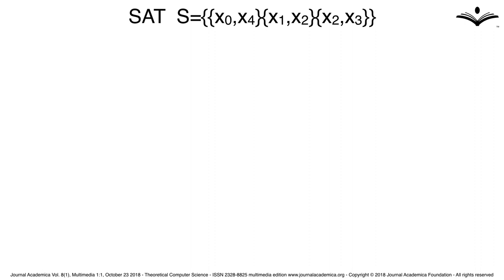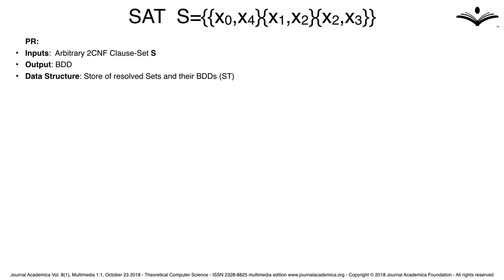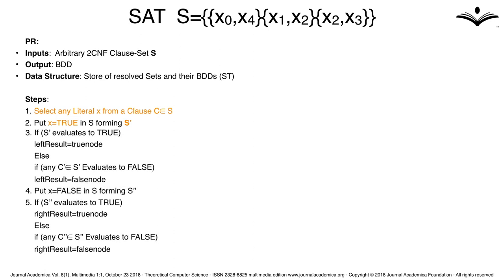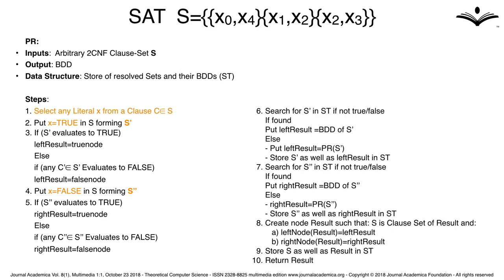If we look at the procedure generating the BDD — let's call it PR — there is a very simple way of doing this. First, you select any literal in the formula S. Then you substitute true for this literal and form a new left clause set, and substitute false for the same literal to form a right clause set. Then you call yourself recursively for both. The two highlights of this procedure are the way you select any literal from the clause set, and the fact that you should store in a data structure all subformulas already done, to avoid redundant work.